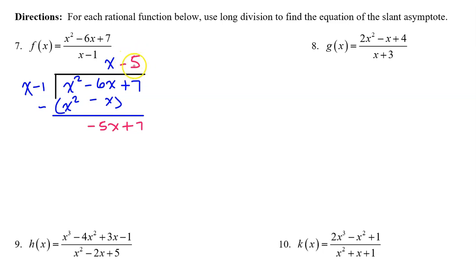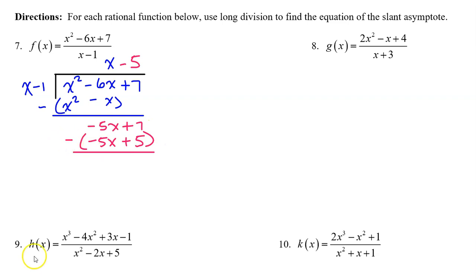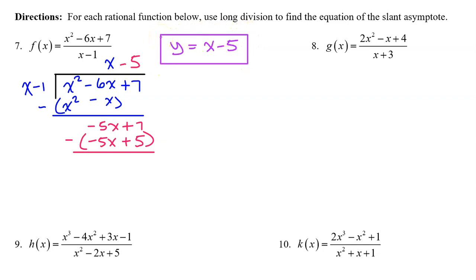Now multiply: negative five times x is negative five x, negative five times negative one is positive five. Notice that we already have the answer — as soon as we got to this constant, we had the slant asymptote, which is y equals x minus five. That's the answer to number seven. Finishing the long division: these cancel, and seven minus five leaves a remainder of two.